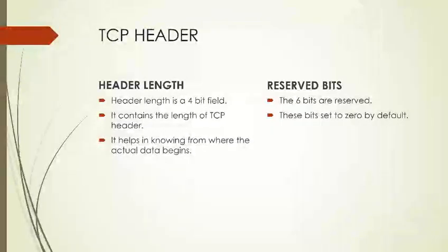Header length is a 4-bit field which contains the length of the TCP header. It helps in knowing from where the actual data begins, since the data follows the header — knowing the length of the TCP header tells us where the data begins.